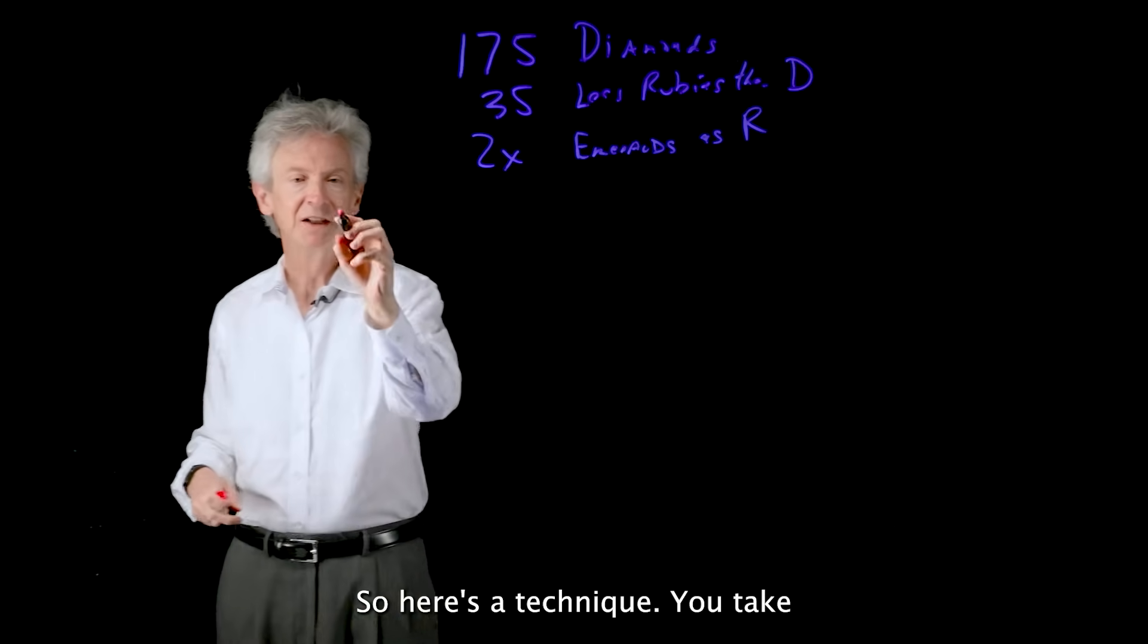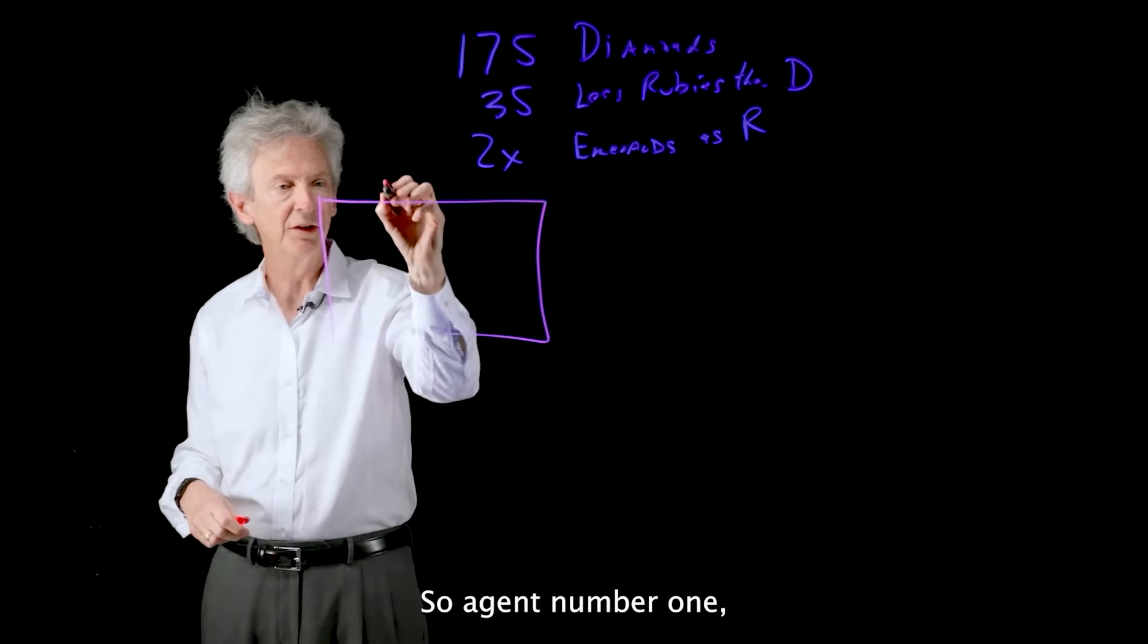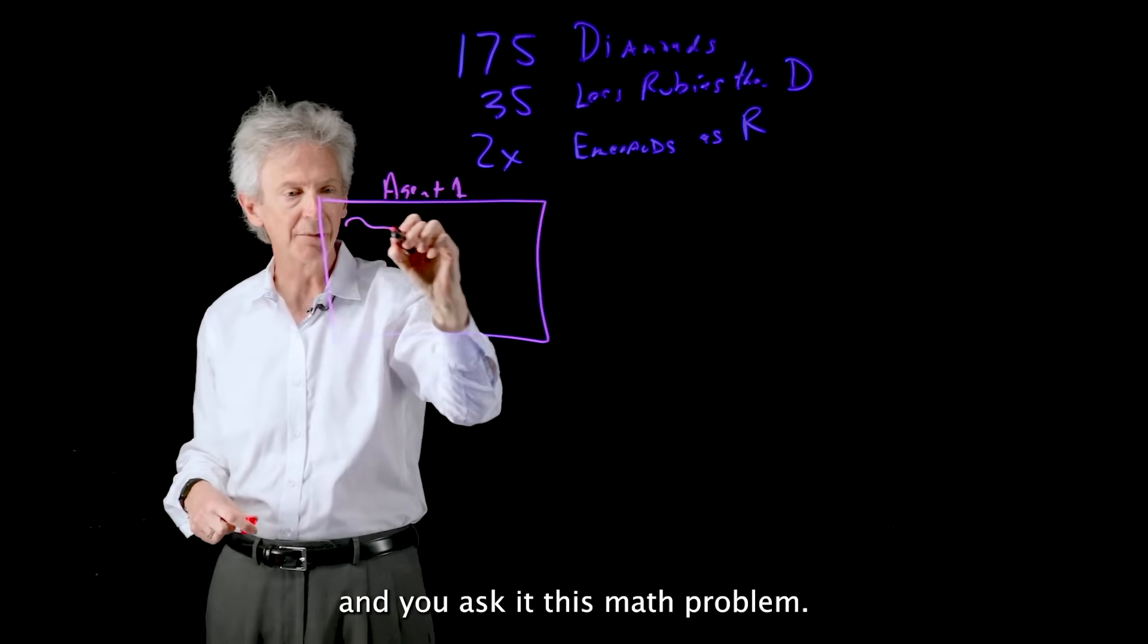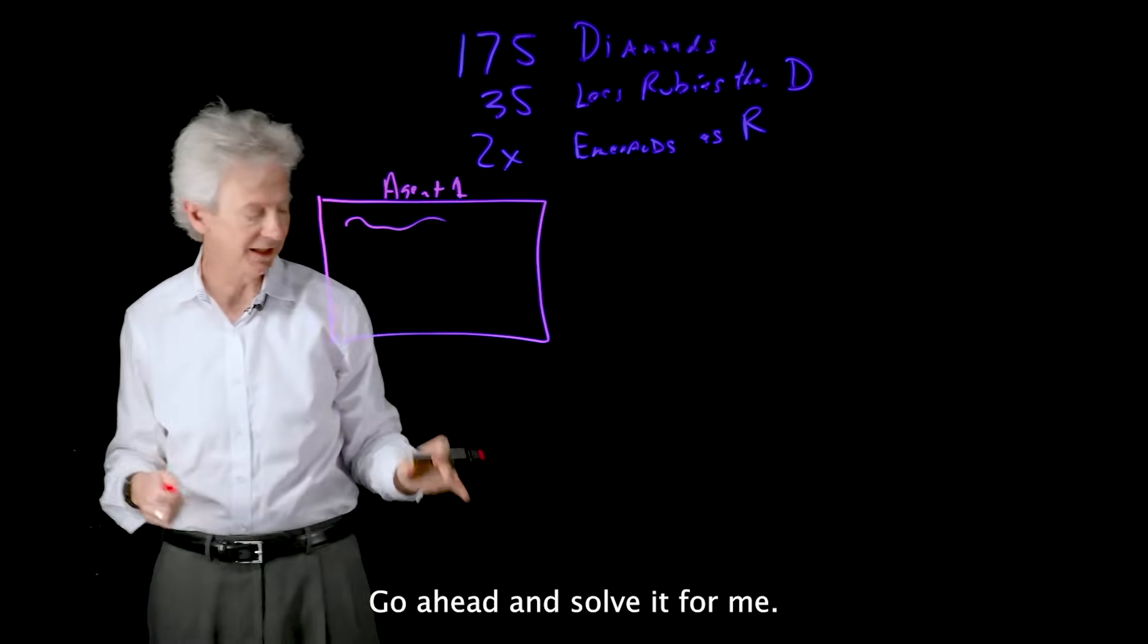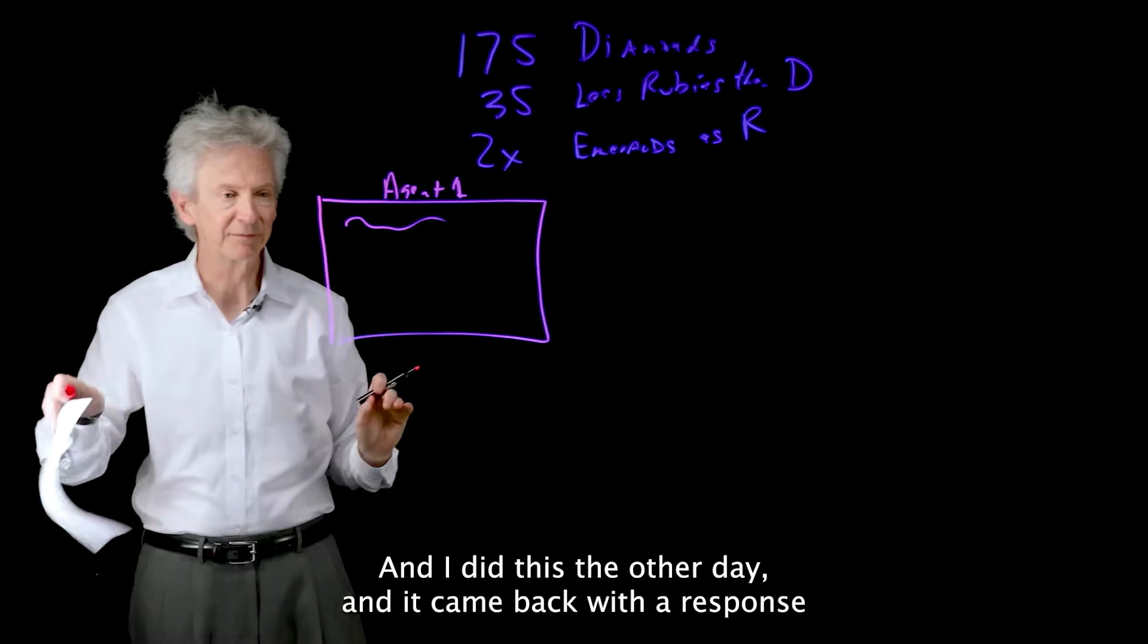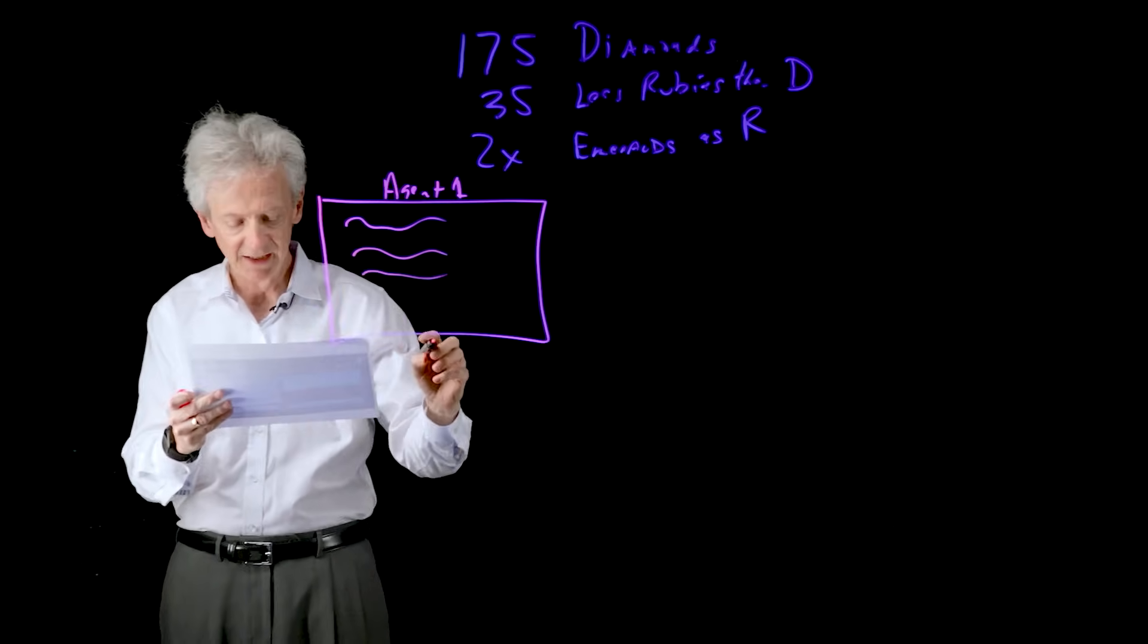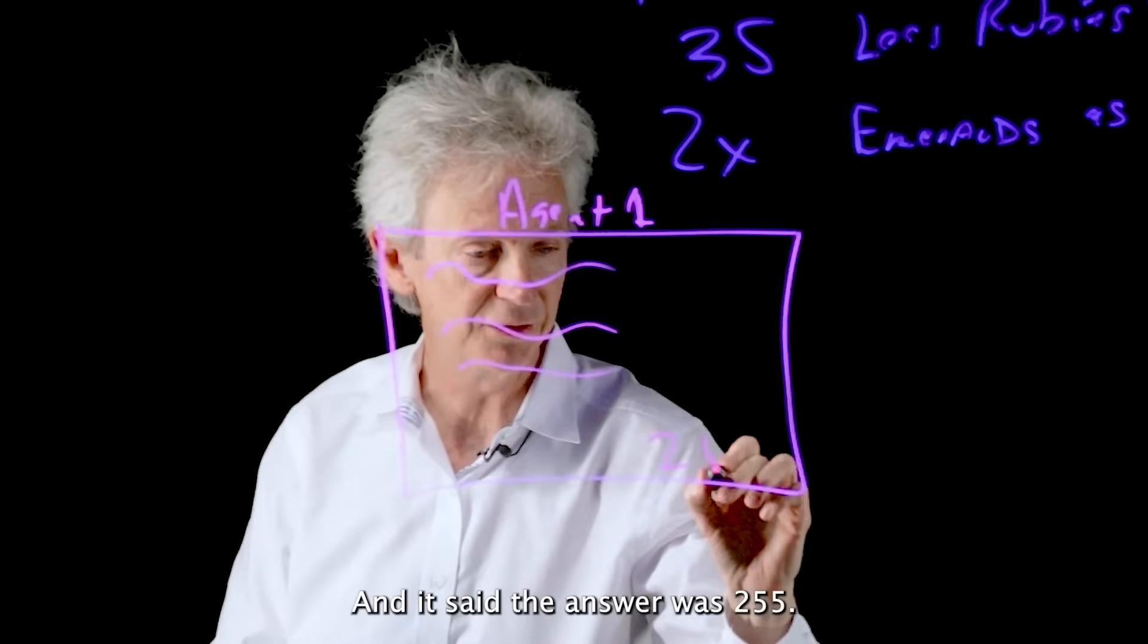So here's a technique. You take model number one, so agent number one, and you ask it this math problem. So you say, here's my problem. Go ahead and solve it for me. And I did this the other day. And it came back with a response and gave a big explanation of how it did the math. And it said the answer was 255.